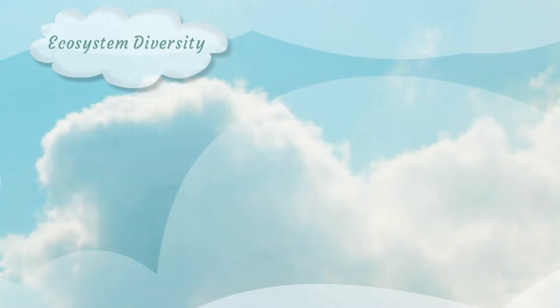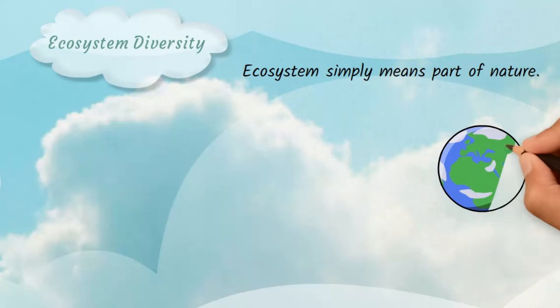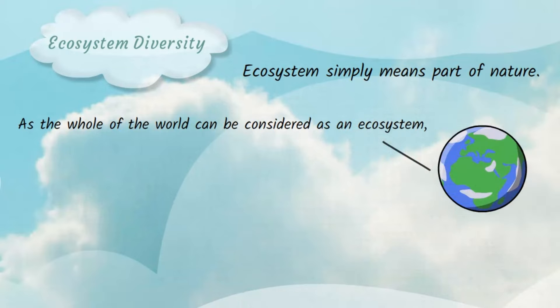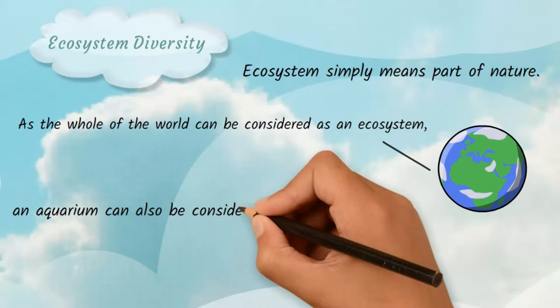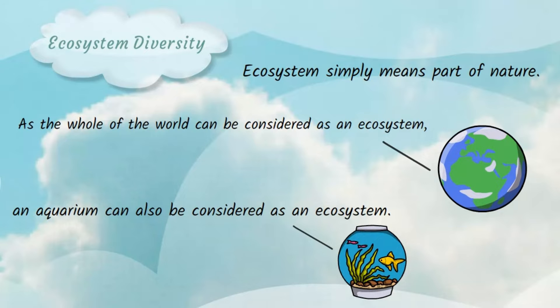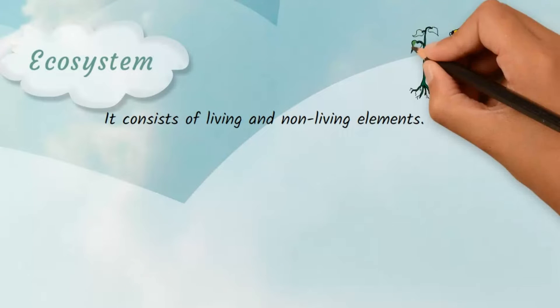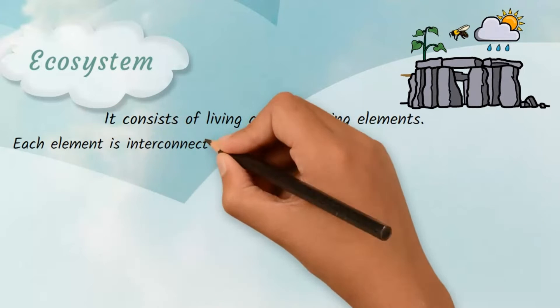Ecosystem Diversity. Ecosystem simply means part of nature. As the whole of the world can be considered as an ecosystem, an aquarium can also be considered as an ecosystem. It consists of living and non-living elements. Each element is interconnected with each other.